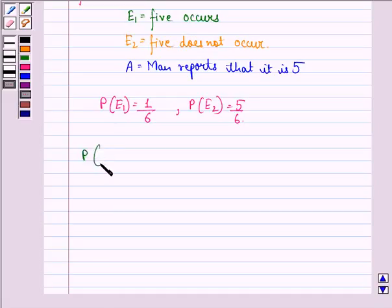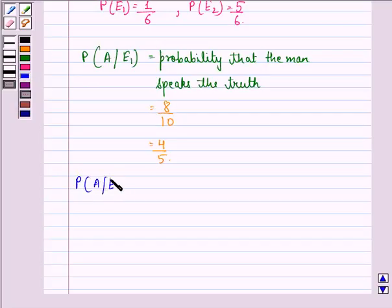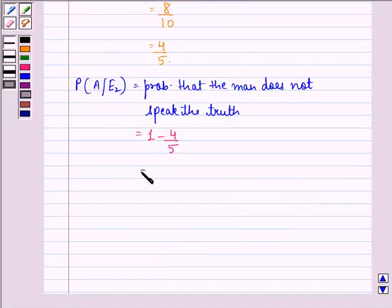Now, probability A oblique E1, that is the probability that the man speaks the truth, is 8 upon 10 that is equal to 4 by 5. And probability A upon E2 is the probability that the man does not speak the truth, is 1 minus 4 by 5, and that is equal to 1 by 5.